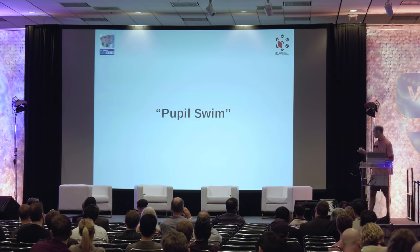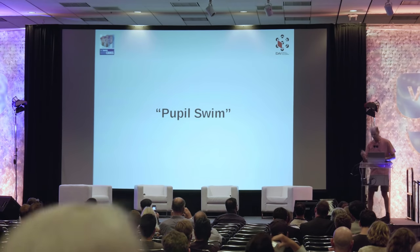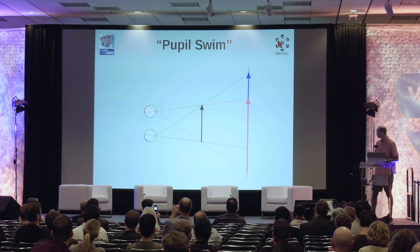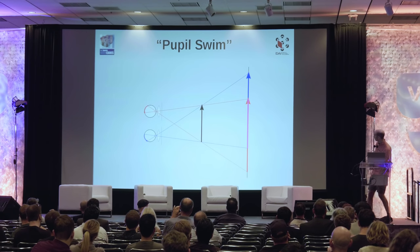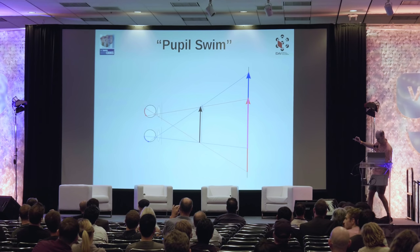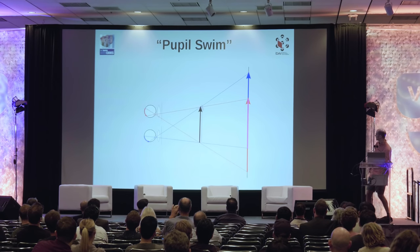There's one more issue: pupil swim. Even with correct configuration, the previous examples assumed the user was always staring straight ahead. But users also move their eyes within the headset without moving their head. When the pupil shifts — say Alice looks left or right — the virtual object shifts in response, because the computer doesn't know the eye has moved. This slight deviation is called pupil swim, and there's not much we can do about it unless the computer can track your eyes.